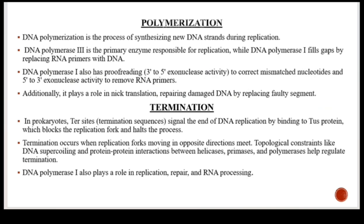Termination is the final process of replication. In prokaryotes, termination sequences (Ter sites) signal the end of DNA replication by binding to the Tus protein, which blocks the replication fork and halts the process. Termination occurs when replication forks moving in opposite directions meet. Topological constraints like DNA supercoiling, and protein interactions between helicases, primases, and polymerases, help regulate termination. DNA polymerase I also plays a role in replication repair and RNA processing.